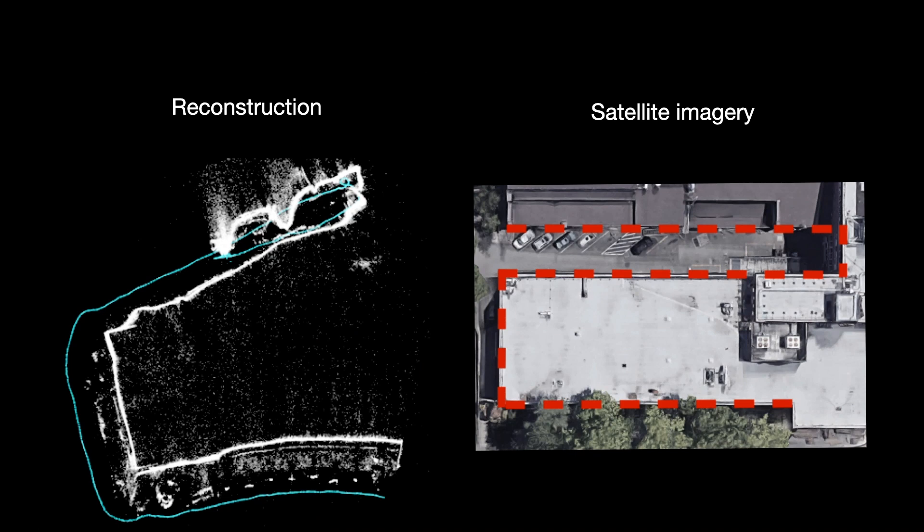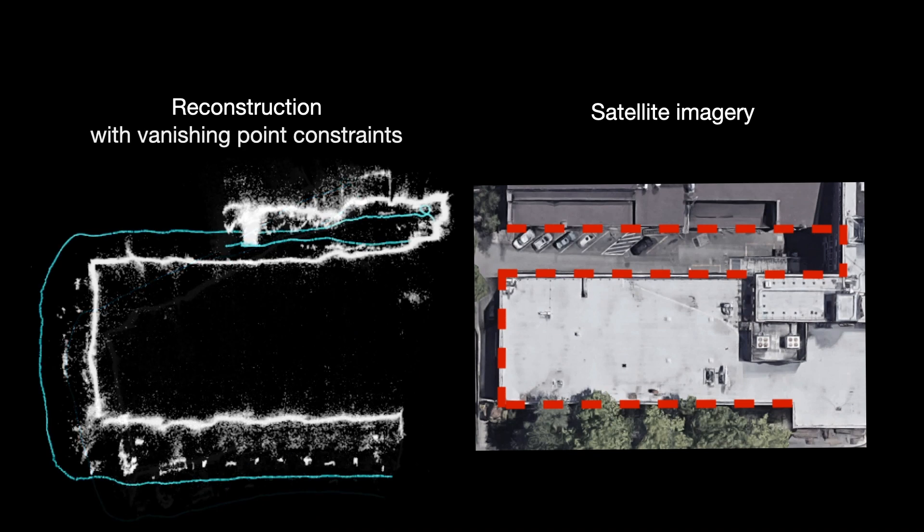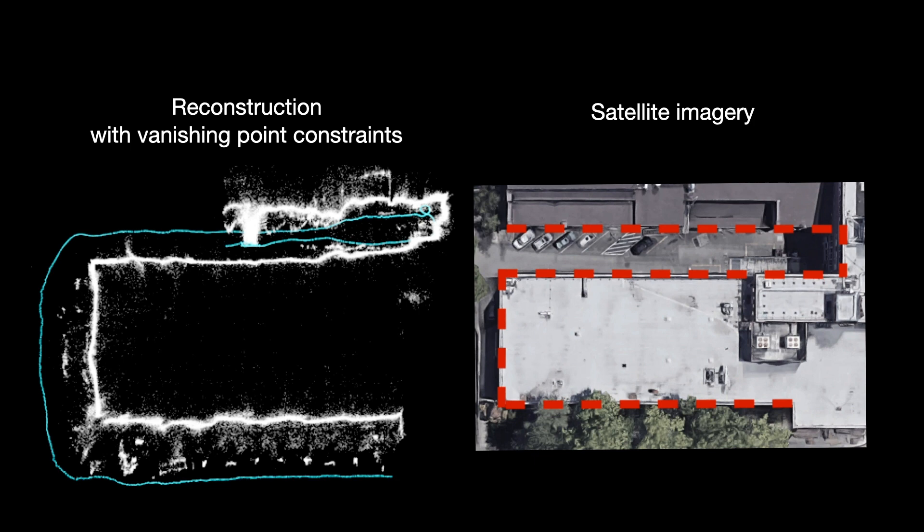Without rotational drift, you can see that there's no longer any bending in our reconstructions, but they still don't look right because of translational or scale drift.